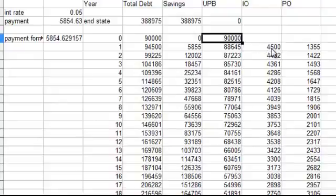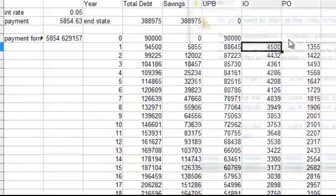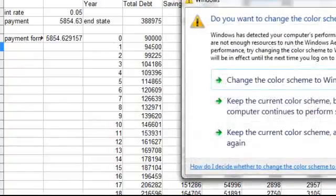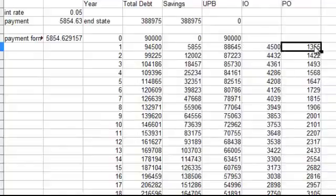But remember that the initial payment also pays off some of the principal, and we have $1,355 worth of principal paid off. So that the next period, the principal is lower, and because the principal is lower, the interest portion of the payment is lower.